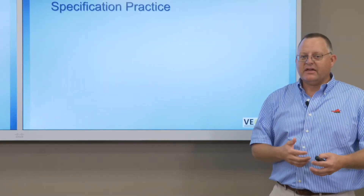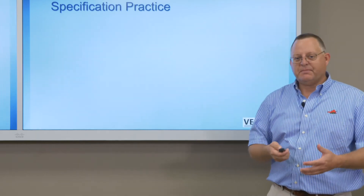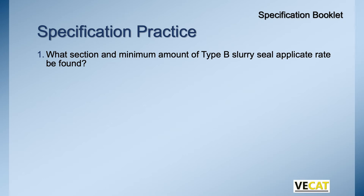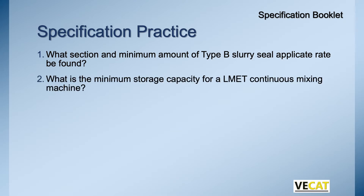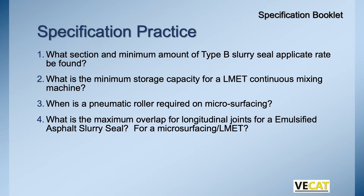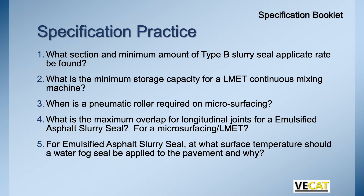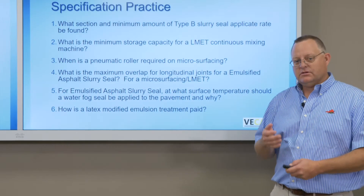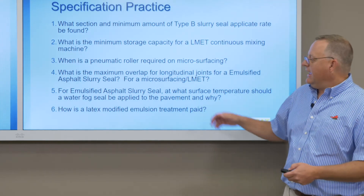To give you a good feel for the specs and how they work, we're going to go through a quick spec exercise. You have these specs in your booklet, so open them up and flip through to answer the following questions: What section covers the minimum application rate for Type B slurry seal? What's the minimum storage capacity for a latex modified emulsion treatment continuous mixing machine? When do you need pneumatic tires? What's the maximum overlap for slurry and for latex? What temperatures require a fog seal and why? And how is latex modified emulsion treatment paid for?